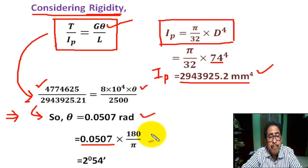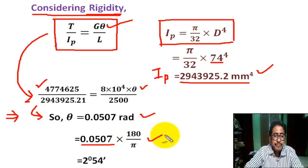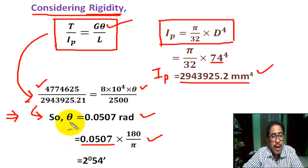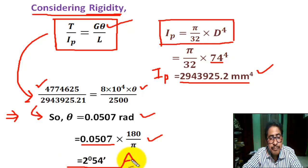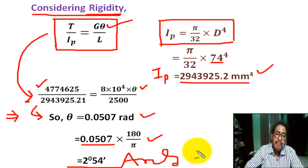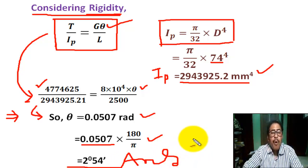We convert theta to degrees by multiplying by 180 by pi. Finally, the angle of twist theta equals 2 degrees 54 minutes. This is the answer to the second part of the problem.